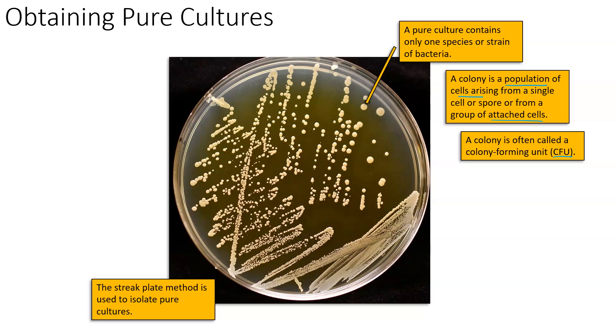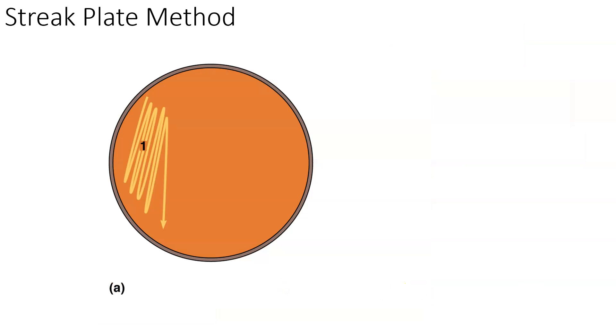This is the streak plate method. The streak plate method is used to isolate pure cultures and it really is the only way that we're going to talk about in this class how to obtain pure cultures. How you streak plate is you will take an agar plate, and it can be a variety of different agars - it can be nutrient agar if nutrient agar is conducive to the bacteria that you're growing, it could be selective or differential media.